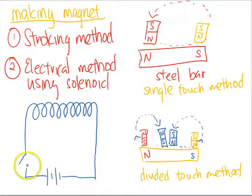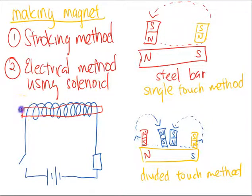What we can do is put a resistor here, otherwise there will be a short circuit. Now, we can put our steel bar inside the solenoid. Sorry for the lousy drawing. We put the steel bar inside the solenoid.